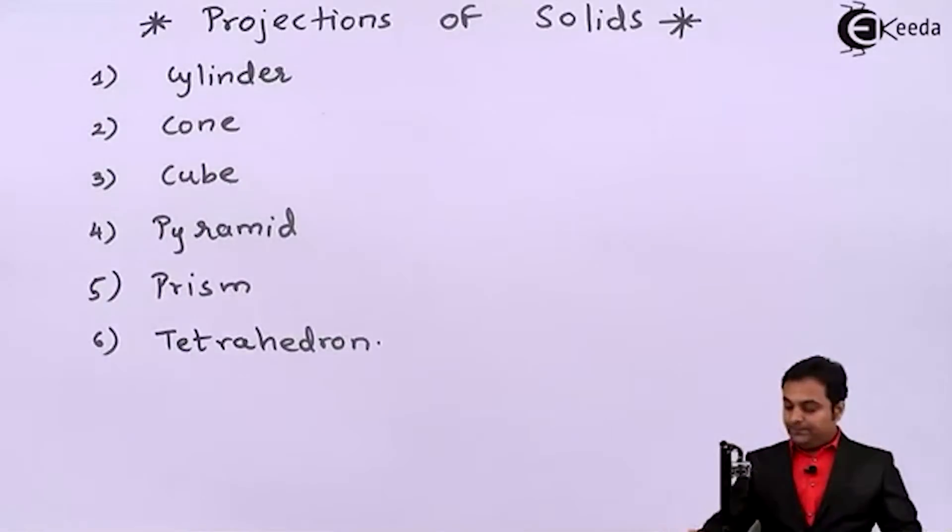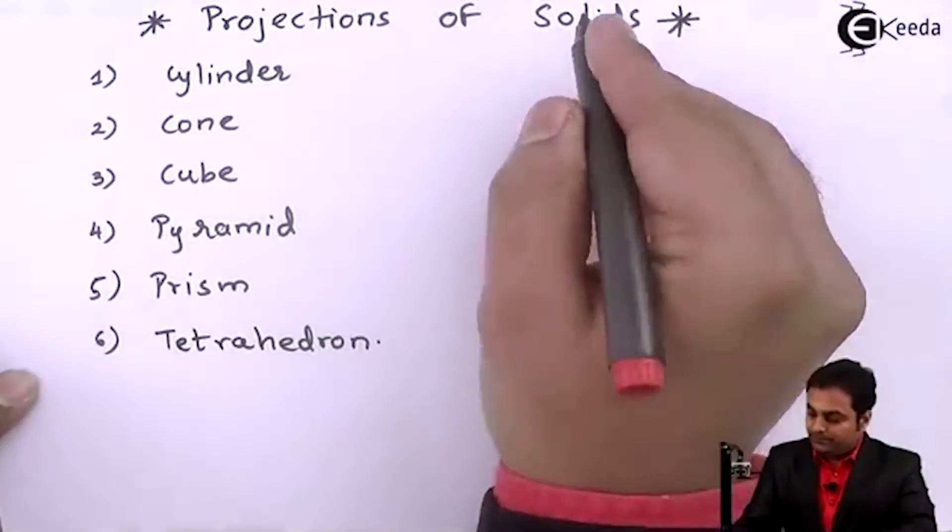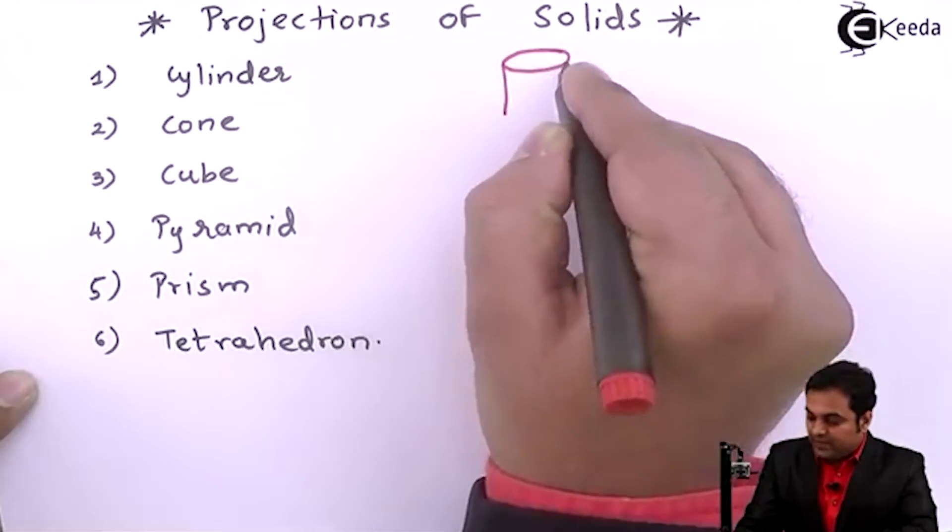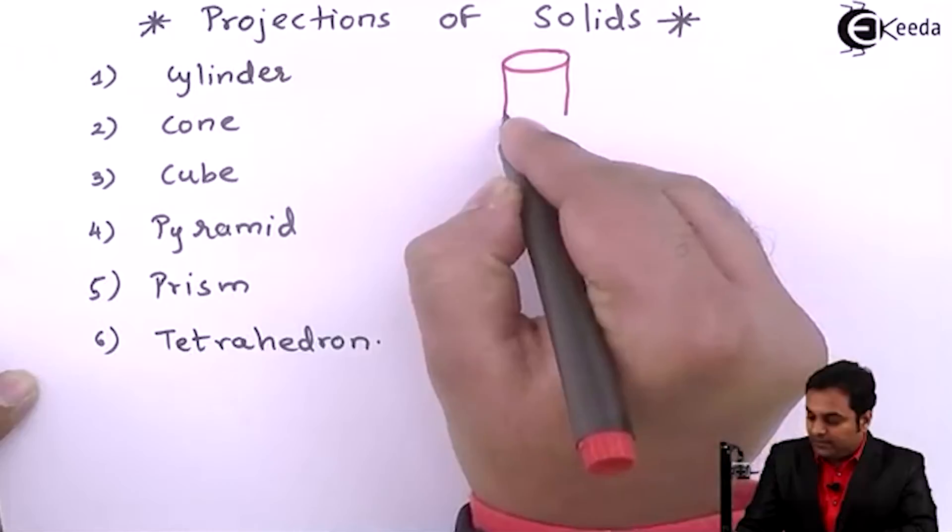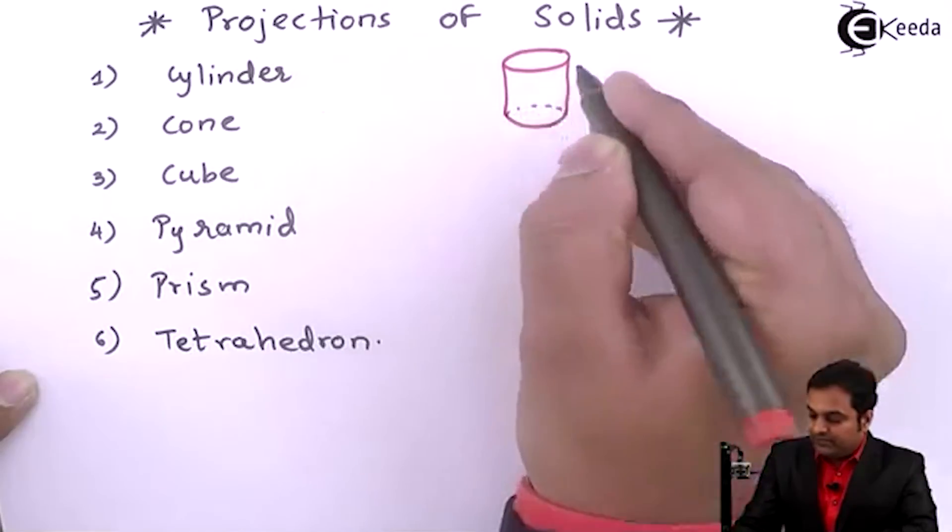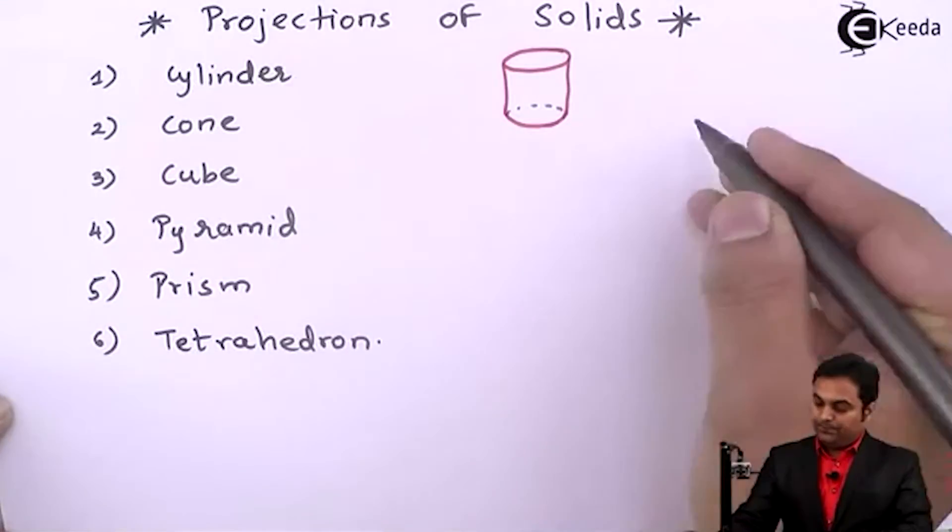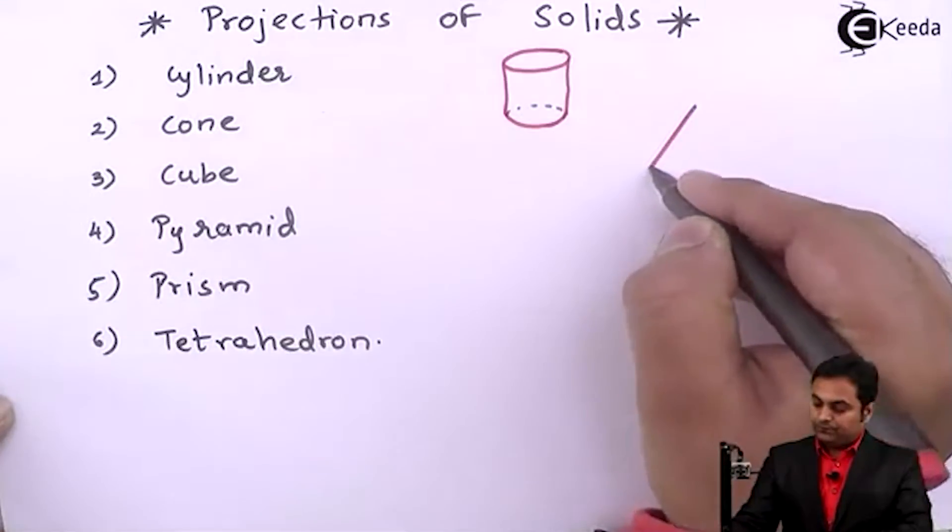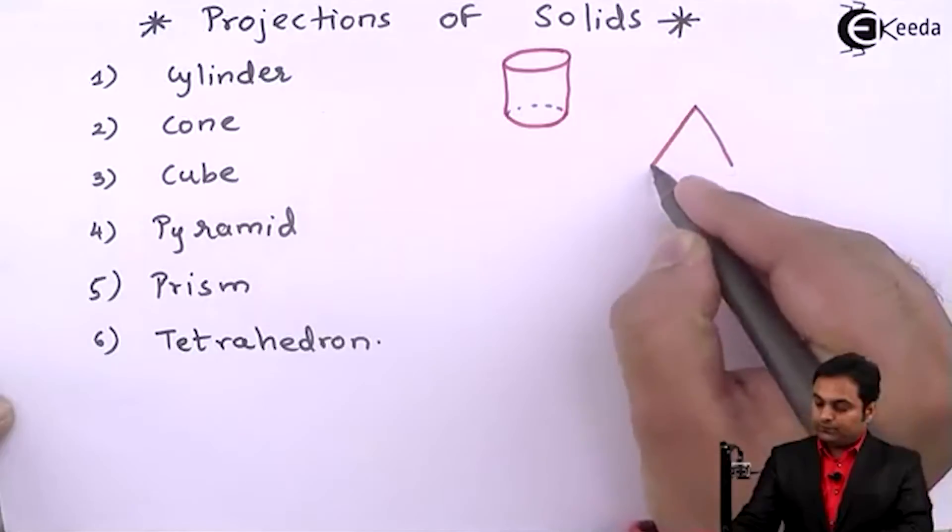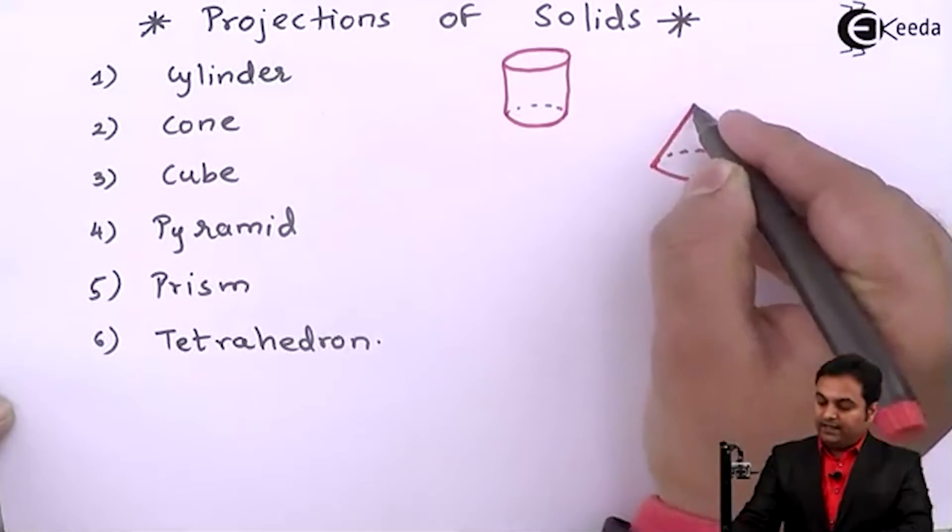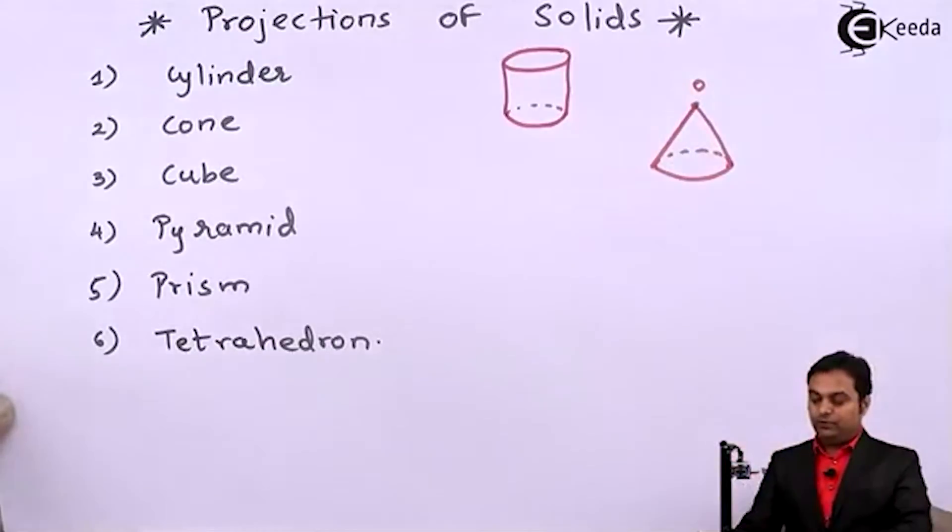When we talk about cylinder, it looks like this - having a circle at the top and even at the bottom and having a height. This is a cylinder. Then there is a cone which is having a circular base and an apex which is point O.